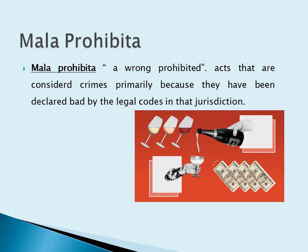For example, selling and drinking of wine is not a crime in India but it is a crime in Saudi Arabia. Similarly, prostitution is a crime in India but not in most counties of Nevada. The same can be said about gambling and drug possession or use.